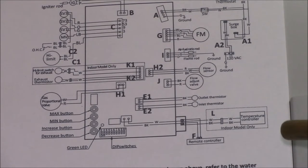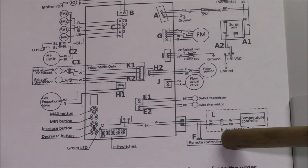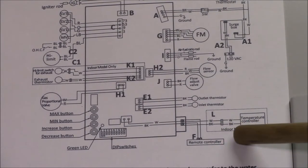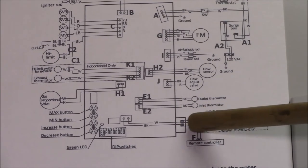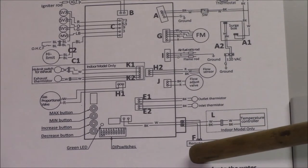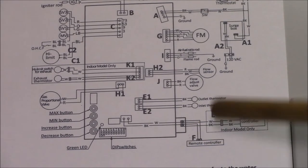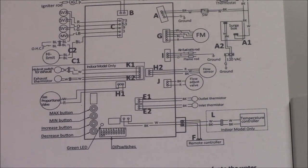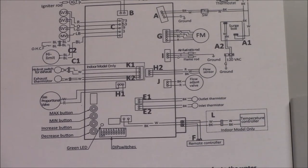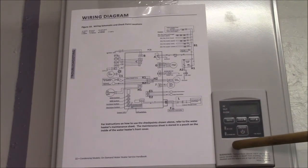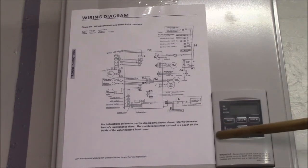This is the wiring diagram out of the service manual that you can download from the Takagi website. Right here it says indoor model only temperature controller - there's two wires, a connector and two wires that go over to a little terminal block. The remote controller wires up to those same two terminal connections, so the built-in or front panel remote is wired in parallel with the actual remote. That says that this remote is basically the same as the official remote.